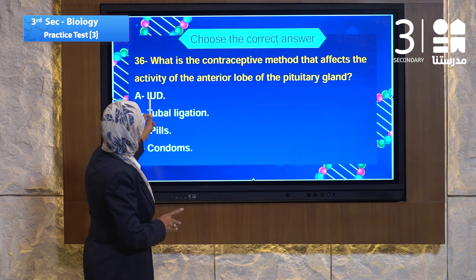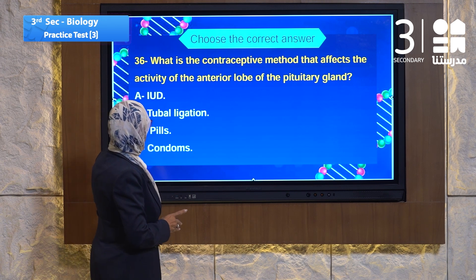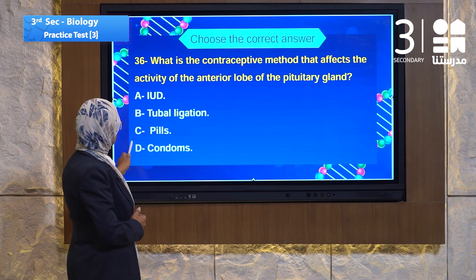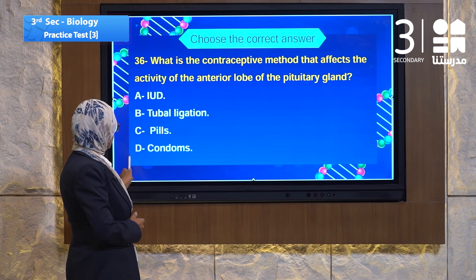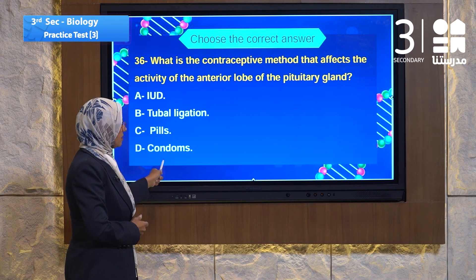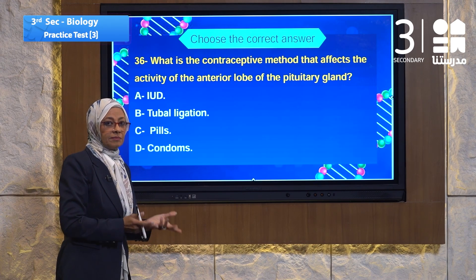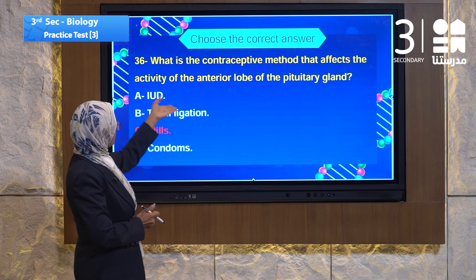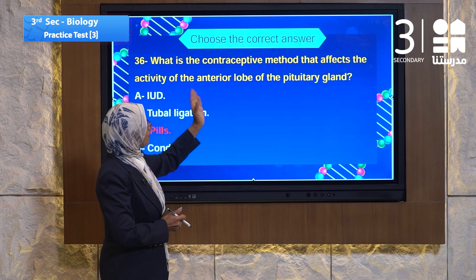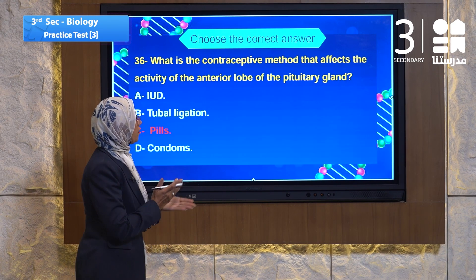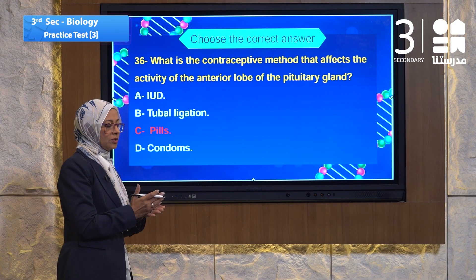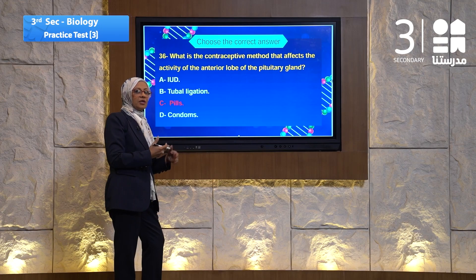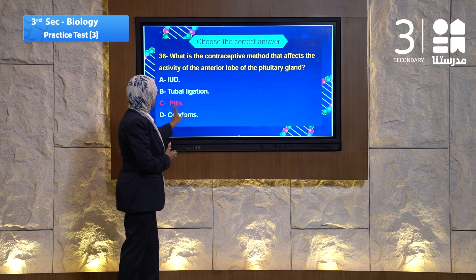The choices are: A, IUD; B, tubal ligation; C, pills; D, condoms. It must be the pills, because pills are the contraceptive method that stops the hormones which produce the stimulation to make the ovum. The answer is the pills.